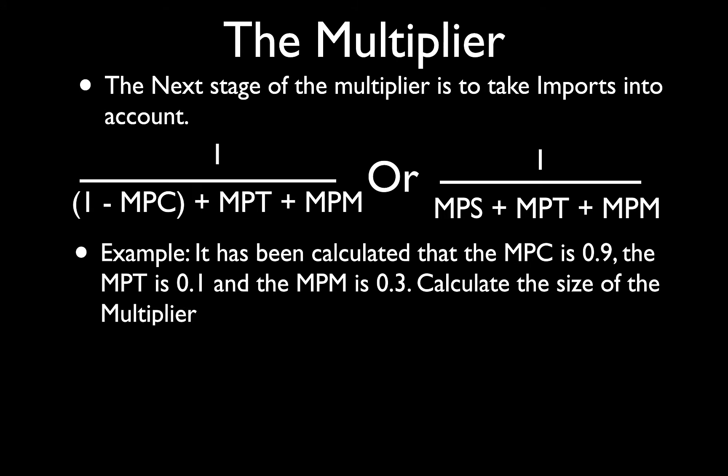Calculate the size of the multiplier. We're going to put all these numbers into this formula. That works out to 1 minus 0.9 which is 0.1, plus 0.1 plus 0.3 is 0.4. So that's 1 over 0.1 plus 0.4 equals 1 over 0.5, and what does that equal to? Two.